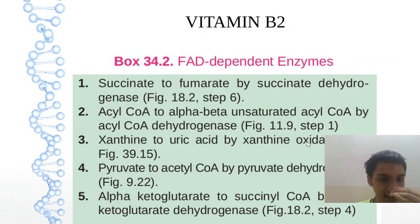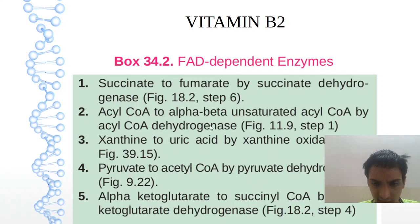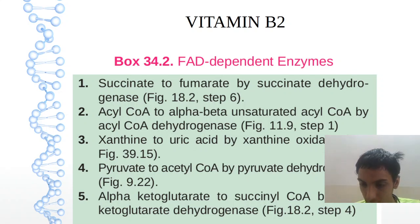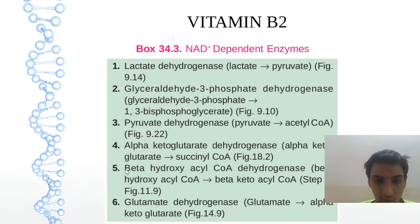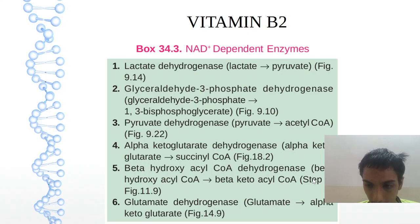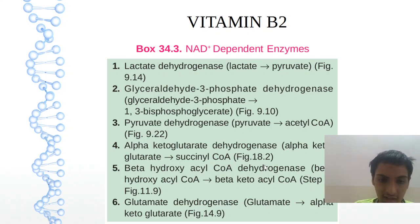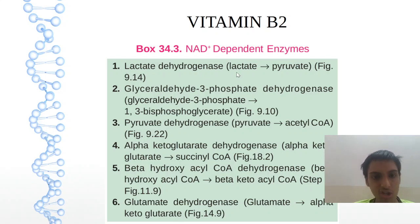Now some examples of NAD⁺ and FAD⁺ enzymes. For FAD, two examples are sufficient: xanthine to uric acid, and pyruvate to acetyl-CoA. For NAD⁺, you can take lactate dehydrogenase and beta-hydroxyacyl-CoA dehydrogenase — catalyzing beta-hydroxyacyl-CoA to beta-ketoacyl-CoA in beta-oxidation. Alternatively, simpler examples are the PDH complex and LDH.